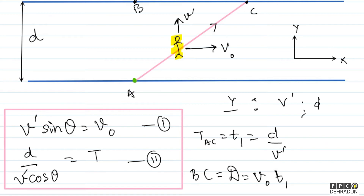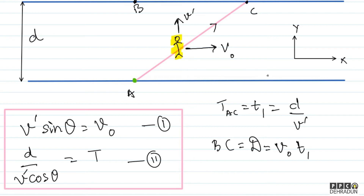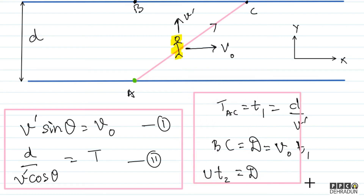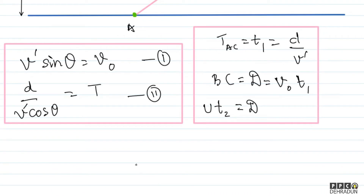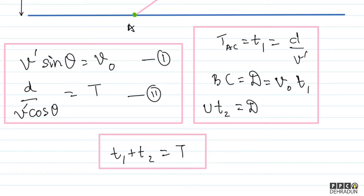उसको C point पर पहुँचकर वापस walk करके B point पर जाना है। वो U speed से travel कर रहा है और T2 time तक travel करता है, तो U × T2 = BC (= drift) होना पड़ेगा। और सवाल कह रहा है कि T1 + T2 = T, यानी दोनों swimmers exactly same time में पहुँचे। तो अपने पास ढेर सारी equations आ गई हैं, बस इन्हें solve करना है।